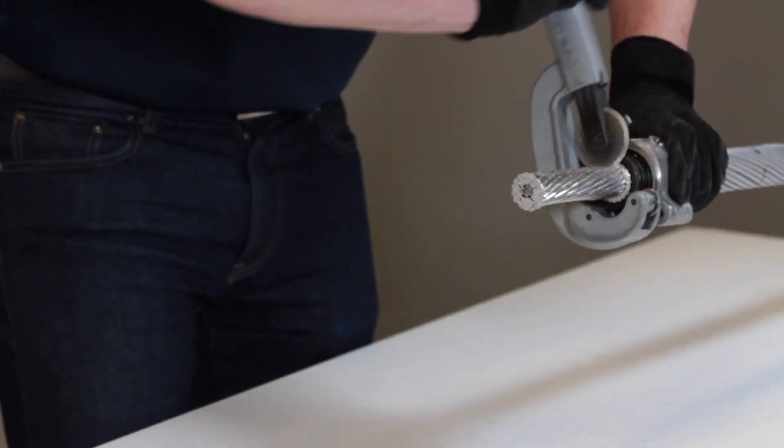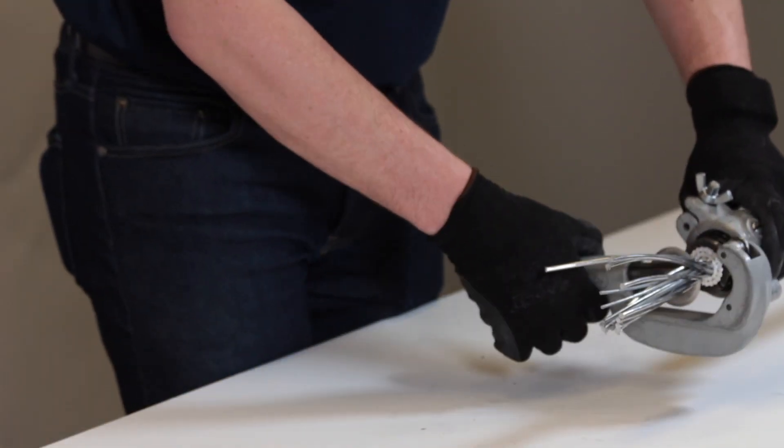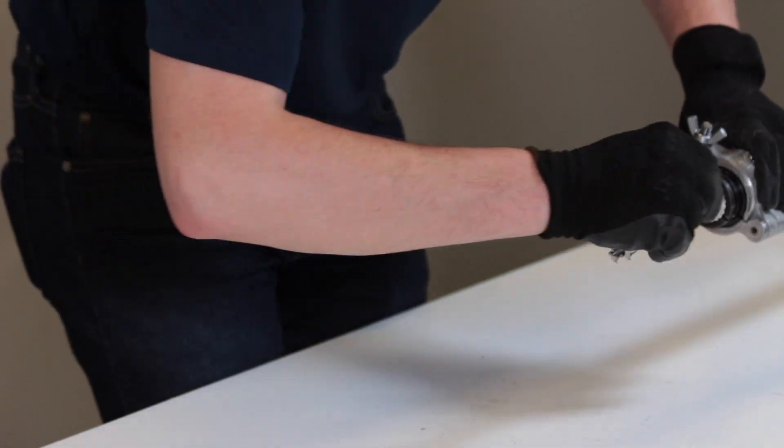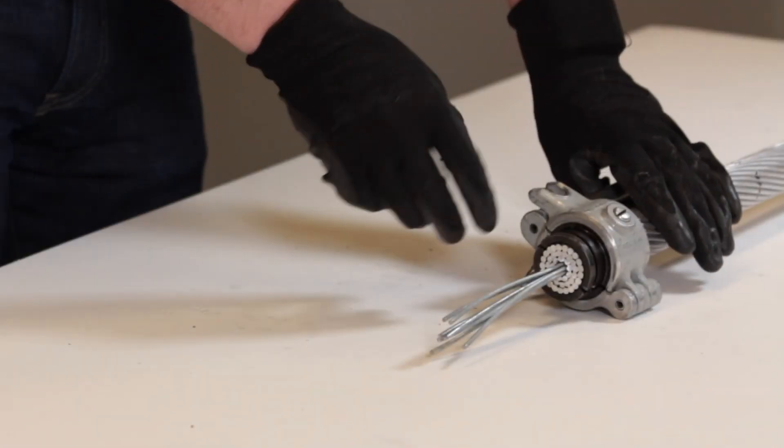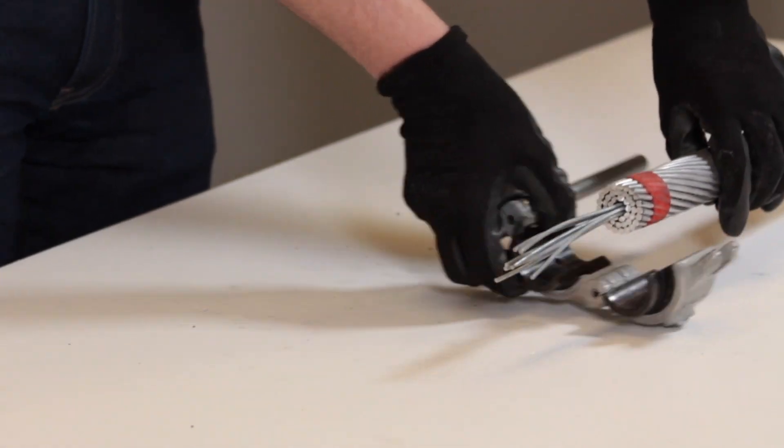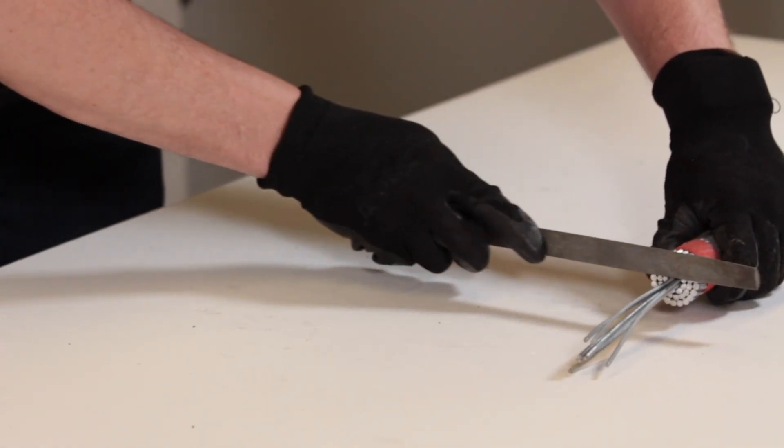To prevent damage and reduce preparation time, PLP recommends the use of a conductor trimming tool. After all the aluminum strands are removed, any flash or burrs on the outside can be removed with a file.